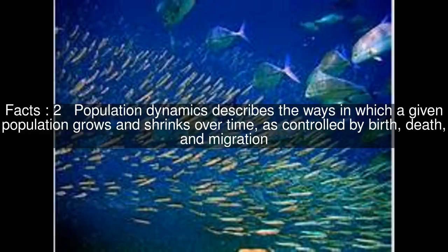Population dynamics describes the ways in which a given population grows and shrinks over time, as controlled by birth, death, and migration.